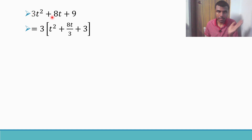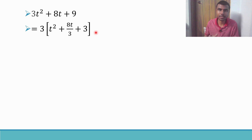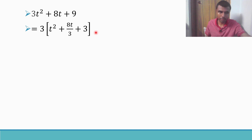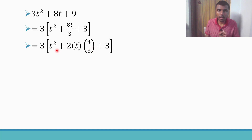Taking 3 common from the denominator gives 3[t² + (8/3)t + 3]. Now rewrite 8t/3 as 2·t·(4/3). This is in the form a² + 2ab, where a = t and b = 4/3. To complete the square, I need to add and subtract b² = (4/3)² = 16/9.